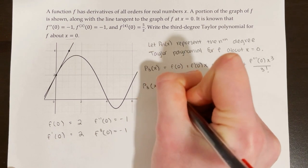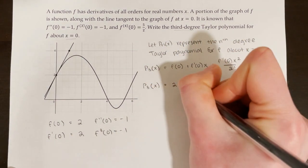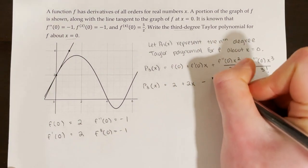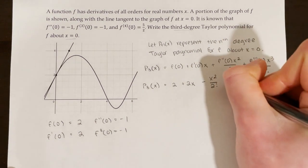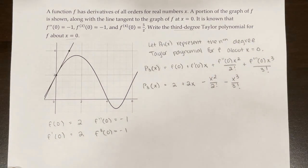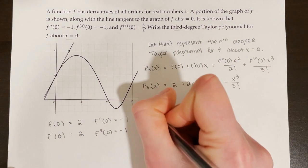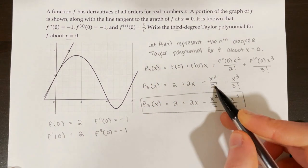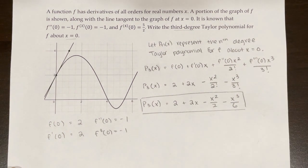So p sub 3 of x is equal to 2 plus 2x minus x squared over 2 factorial minus x cubed over 3 factorial. You can simplify the factorials if you want to, but leaving it like this on a free response question is fine. Simplifying: 2 factorial is 2 and 3 factorial is 6. So the final answer is 2 plus 2x minus x squared over 2 minus x cubed over 6.